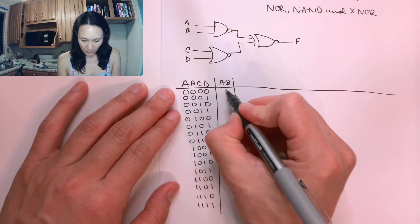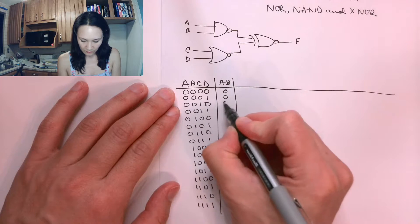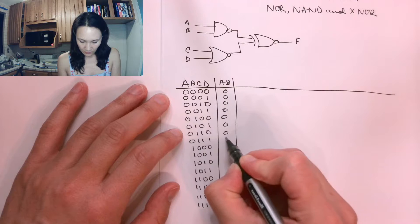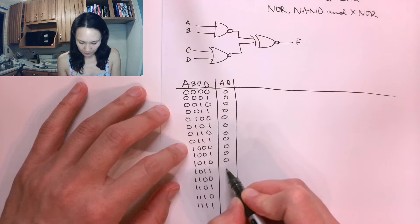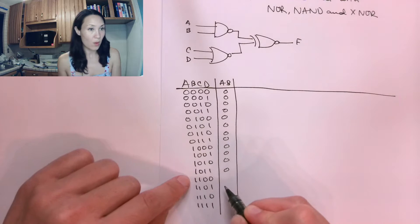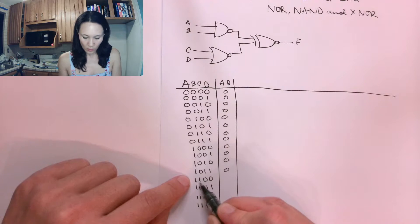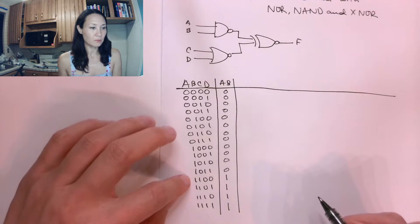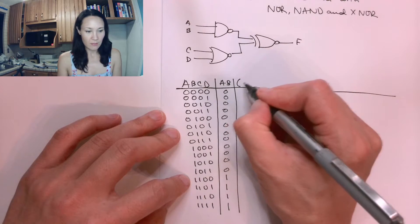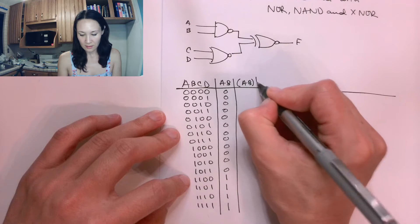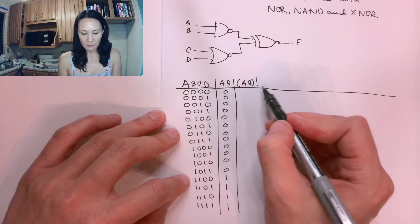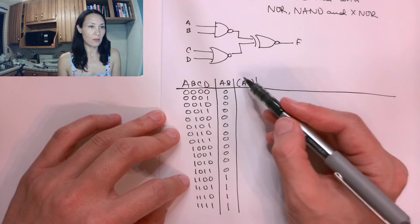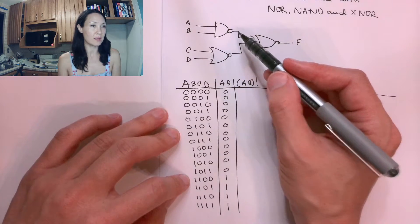So 0 AND 0 is 0, 0 AND 0 is 0 — these will all be 0s. 0 AND 1 is also 0, 1 AND 0 is also 0, and we're not going to get a 1 until we get down to here. So 1 AND 1 is 1, and these will all be 1s. Now I can take this column and invert it. So A AND B NOT is the same thing as NAND. This column right here is going to give me the output of this gate.